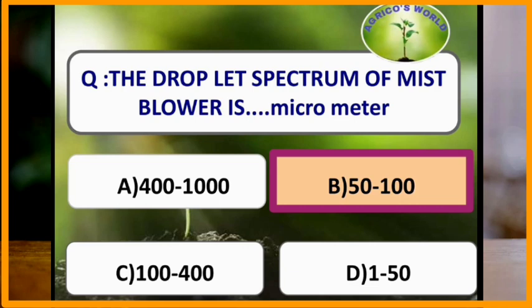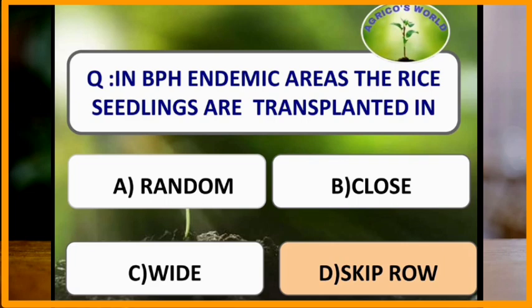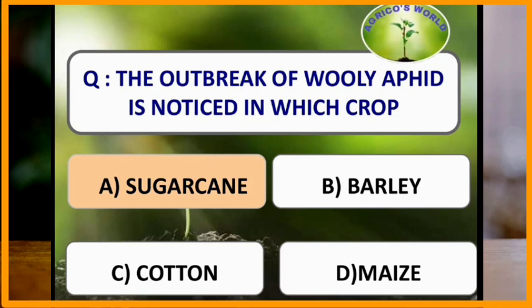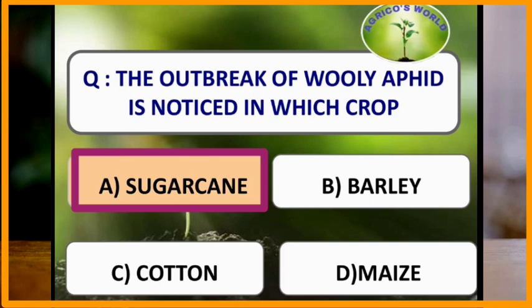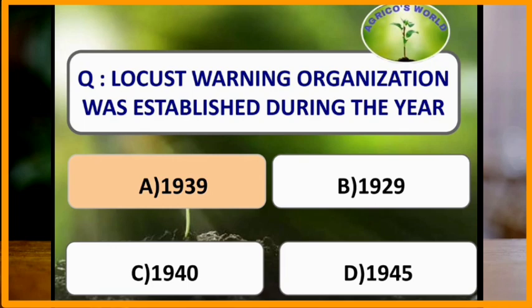In BPH endemic areas, rice seedlings are transplanted in skip row method. The outbreak of woolly aphid is noticed in sugarcane crop.